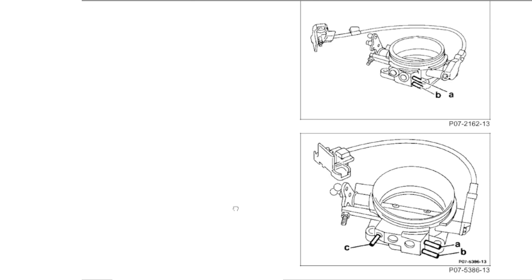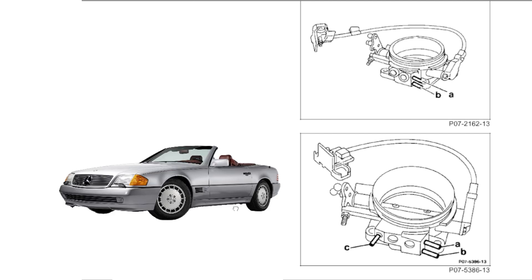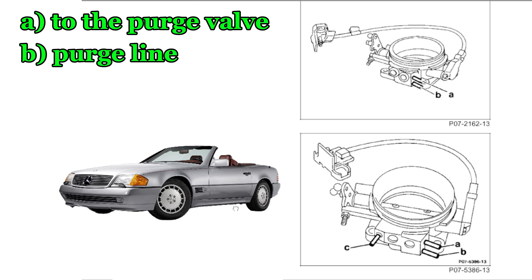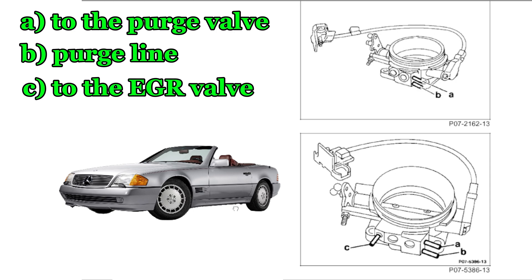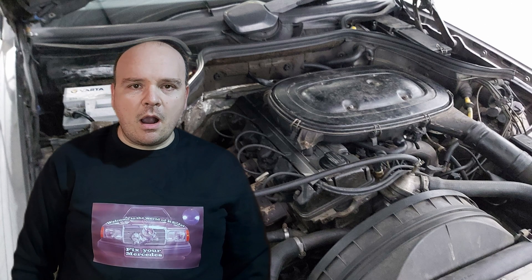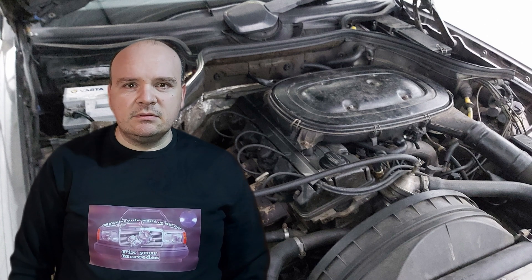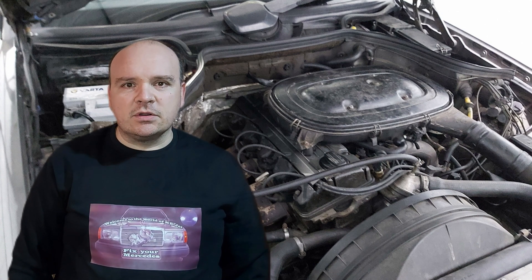Here we have the throttle body for the R129 with the M103 engine. Its throttle body has three lines. Line A goes to the purge valve, line B is also the line for the purge valve, and line C goes to the EGR valve. There are of course different types of throttle bodies for the 190E. The location of the charcoal canister is different for the W126.